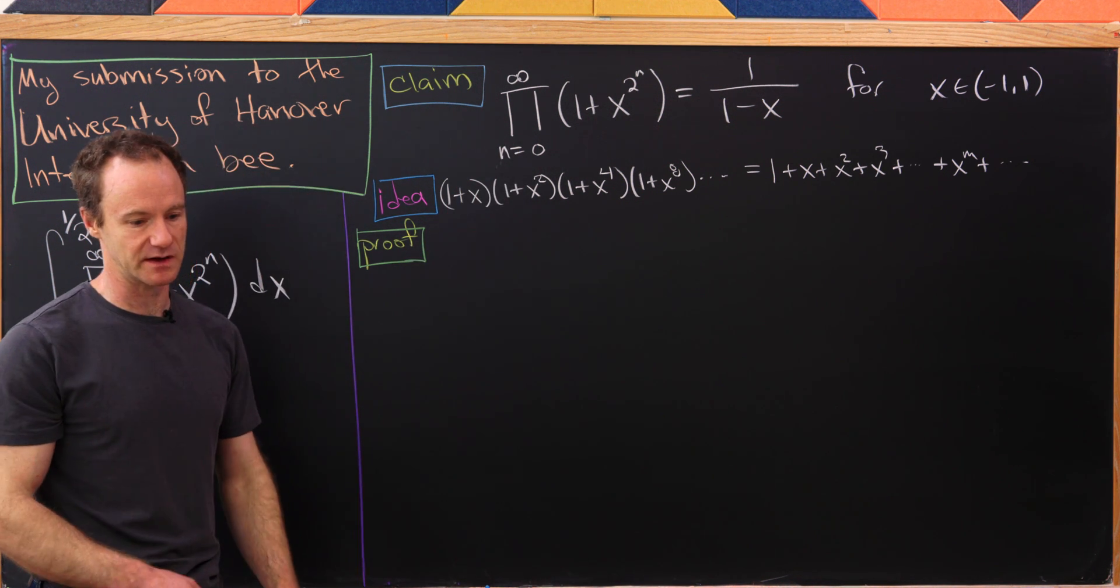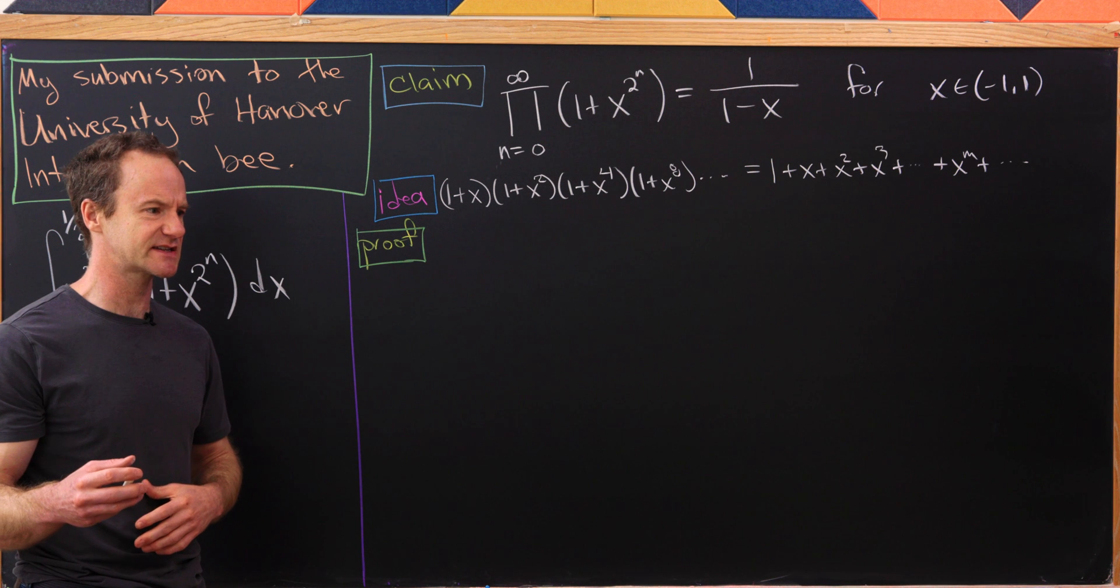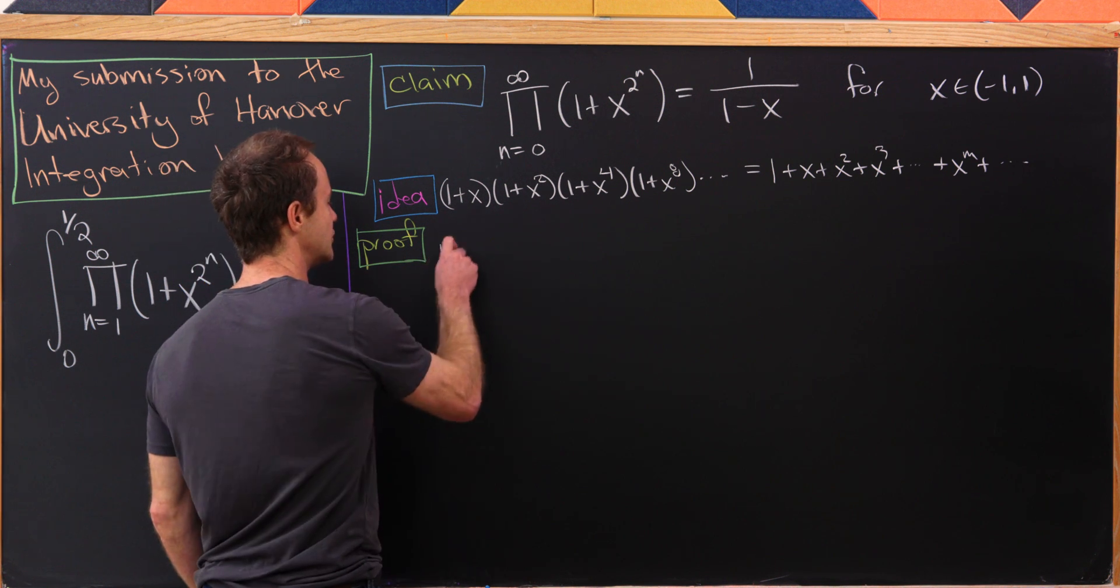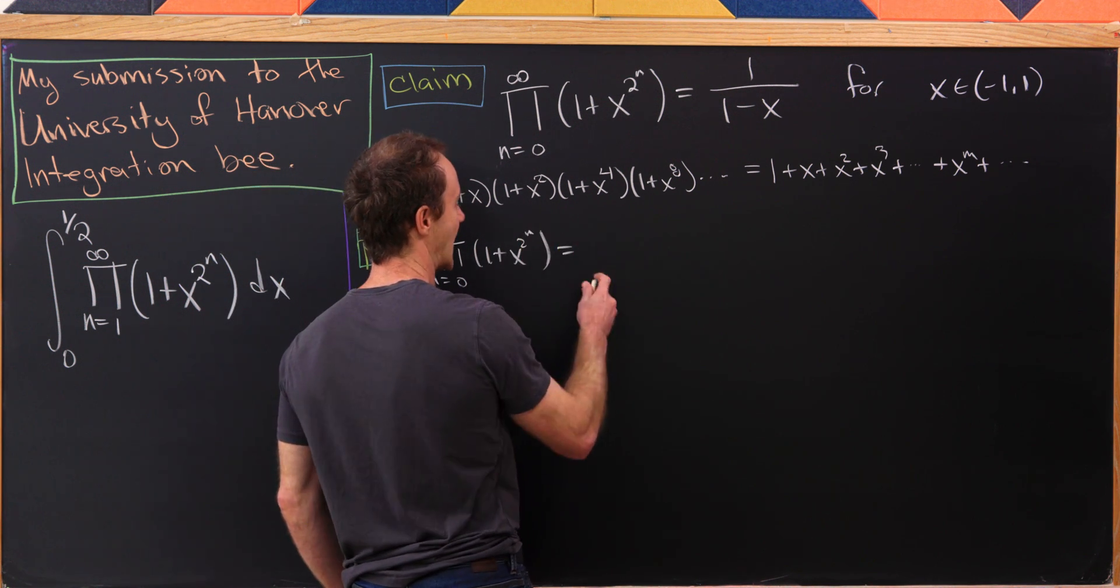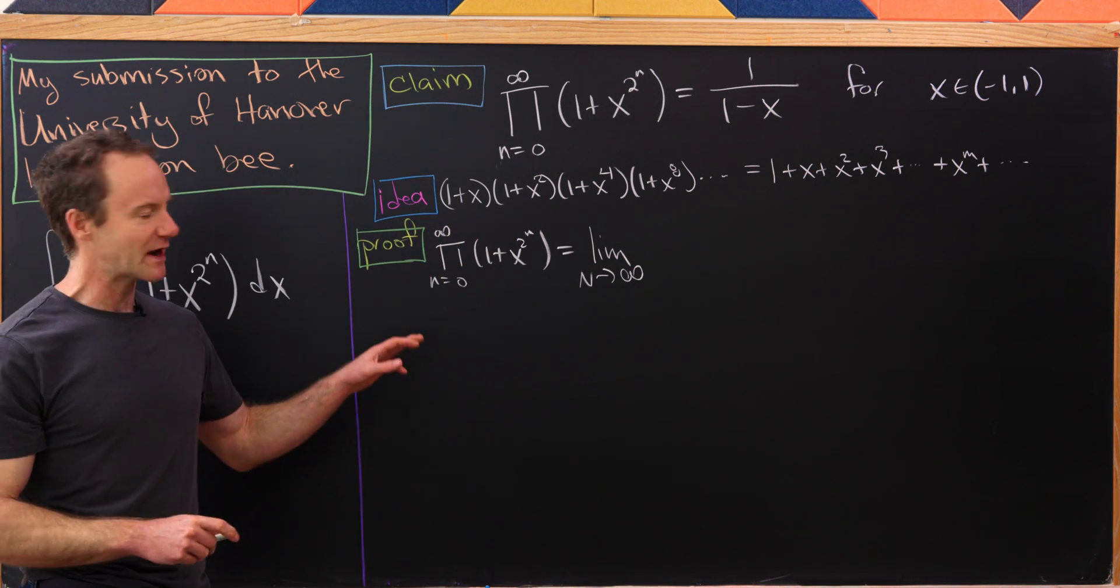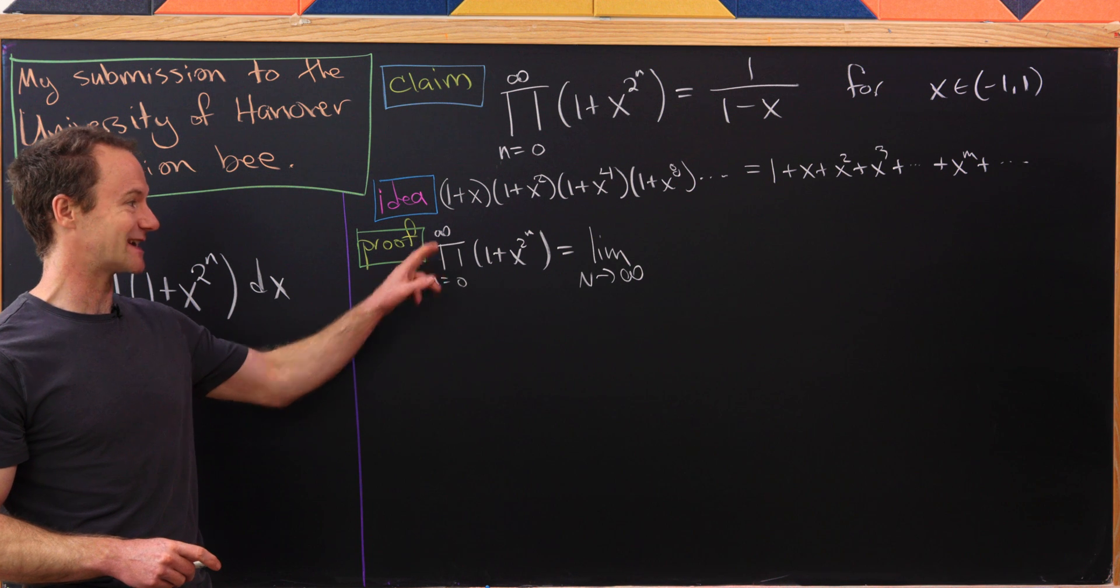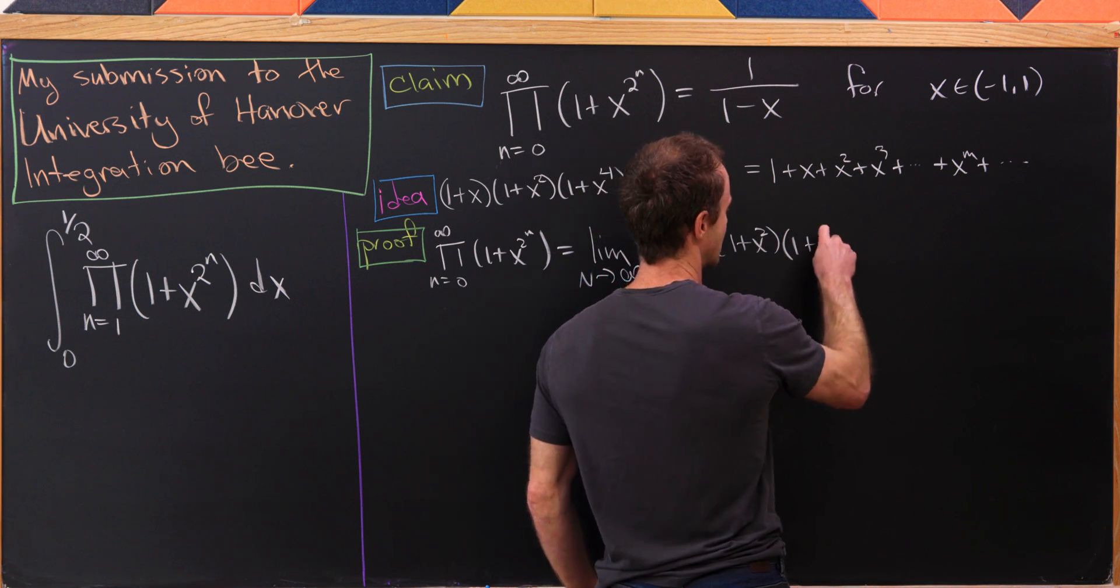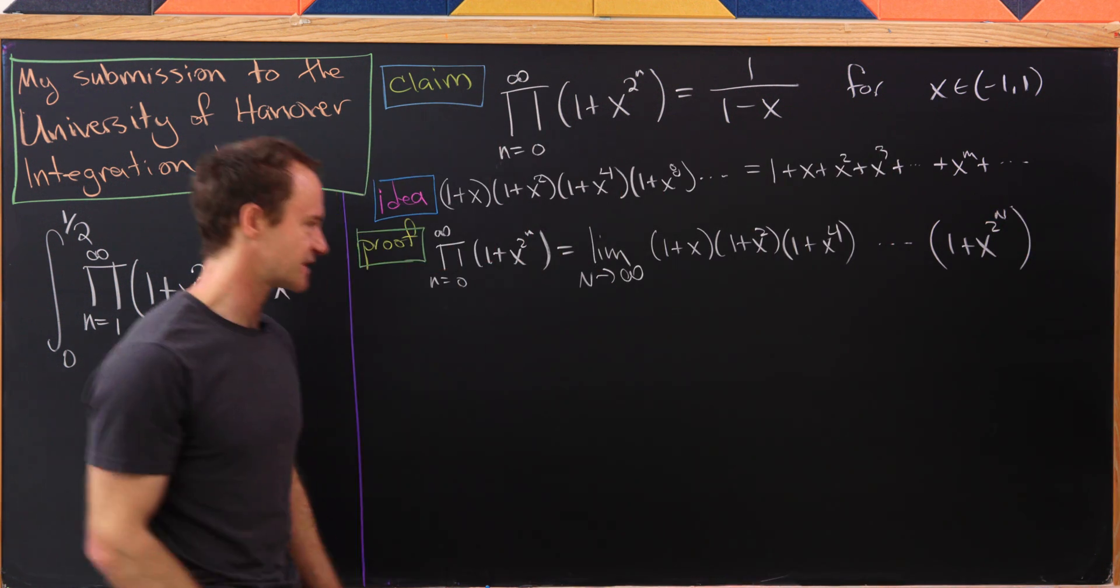I've got this nice proof that uses tricks similar to tricks that you use when working with generating functions for integer partitions. What we'll do is take this infinite product and write it as the limit of a finite product. What I really have is the product from 0 to capital N. So that'll give me 1 plus x, then we'll have 1 plus x squared, next will be 1 plus x to the 4th, and then we end down here with 1 plus x to the 2 to the capital N.